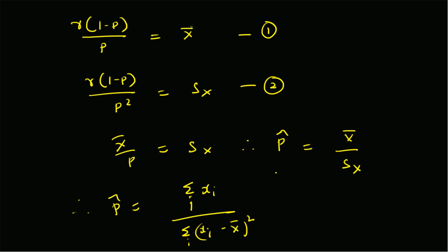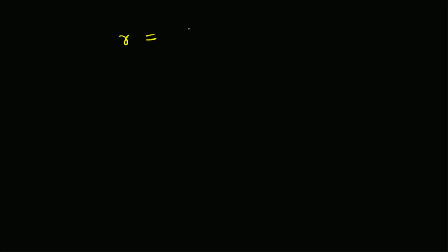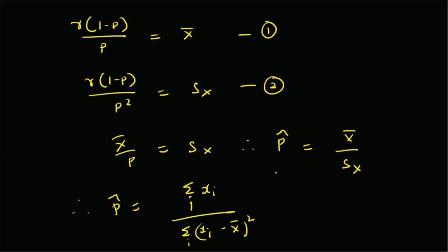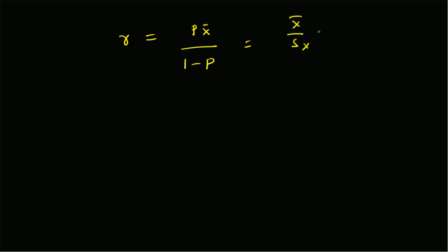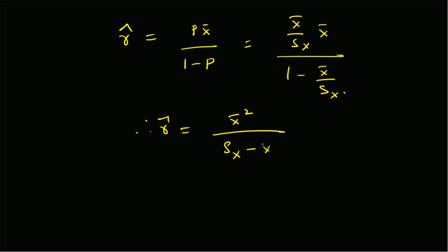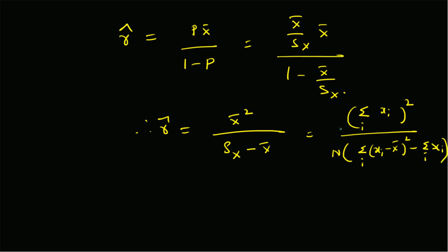From equation one, by substituting the estimate of p, we can determine the estimate of parameter r. r equals p times x-bar divided by (1 minus p), and substituting p-hat equals x-bar divided by sample variance gives r-hat equal to the sample mean squared divided by (sample variance minus sample mean). In terms of actual data, r-hat equals the sum of x_i squared times n divided by n times the sum of (x_i minus x-bar) squared minus the sum of x_i.